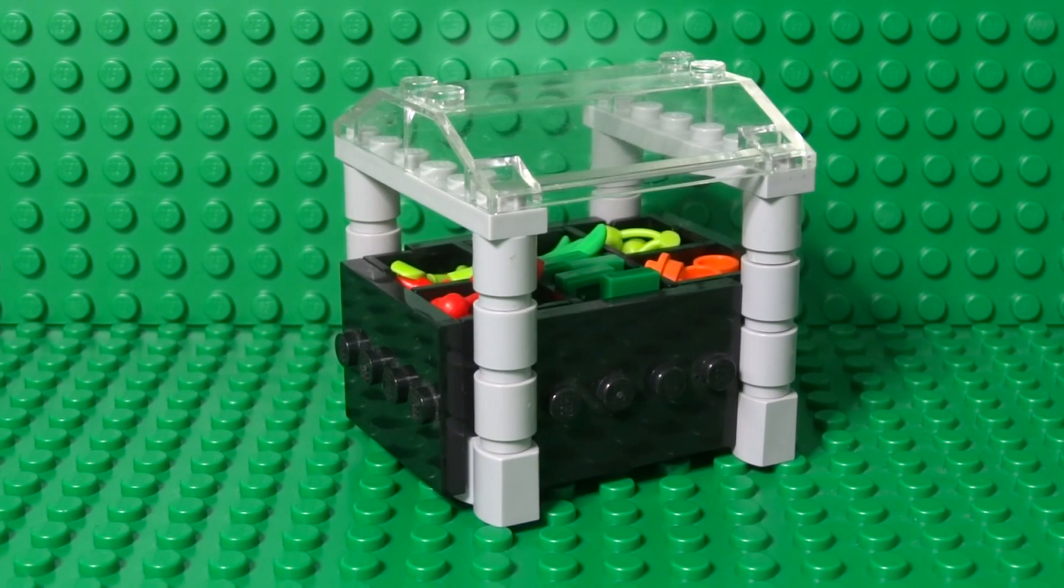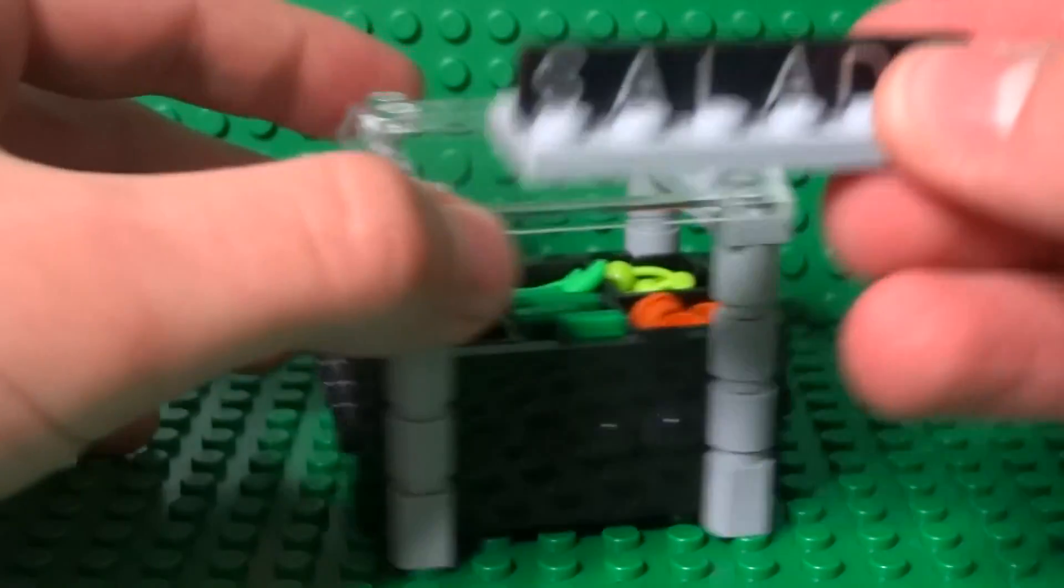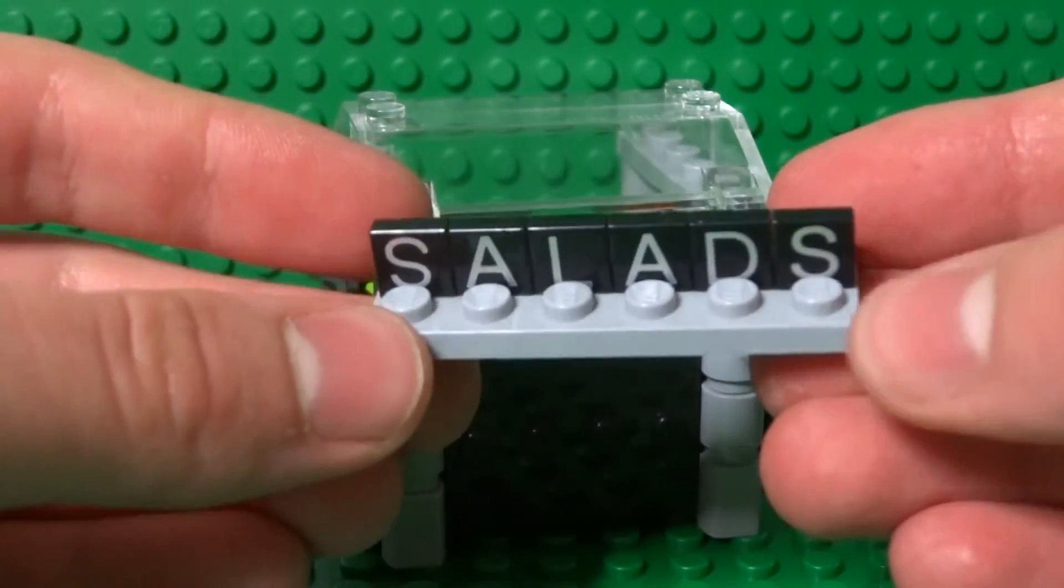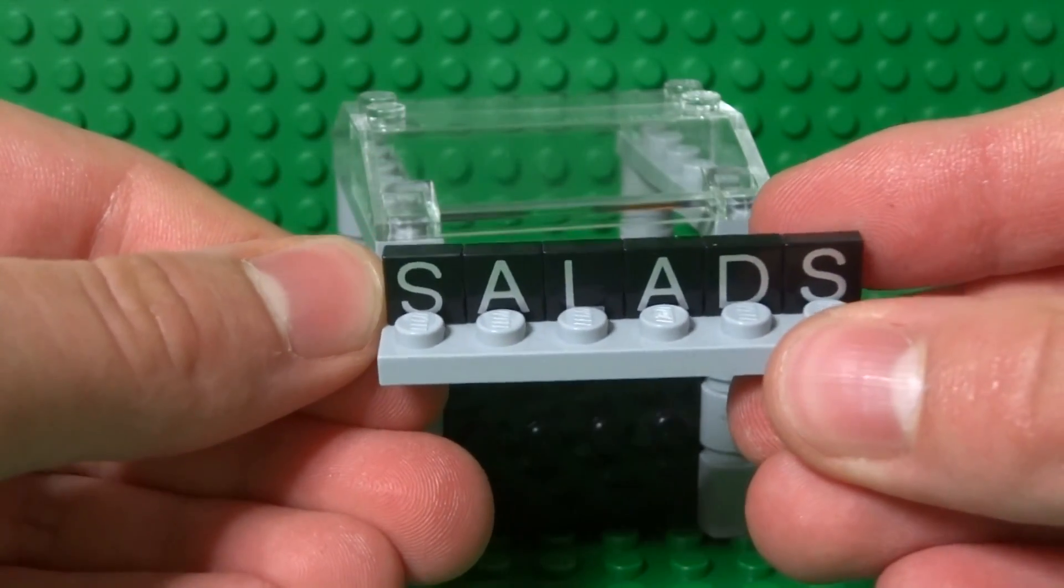And if you want to decorate your salad bar just a little bit more, you can take some Lego tiles and just add them to the top by putting them on a two by six plate. And I'll link what set you can get these from in the description below.